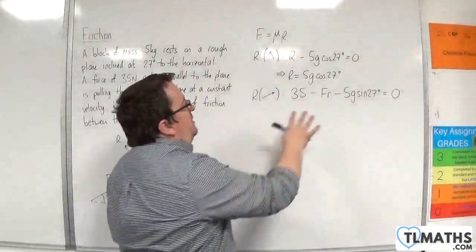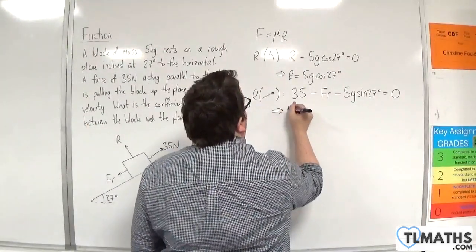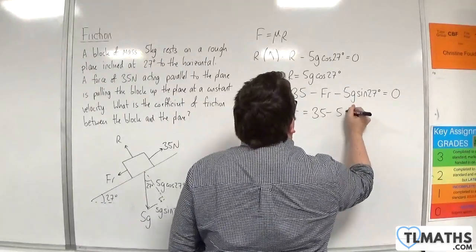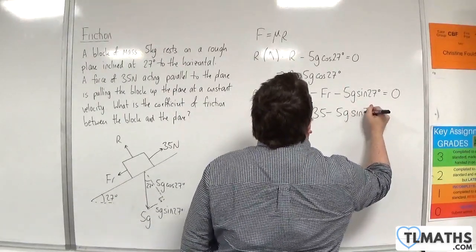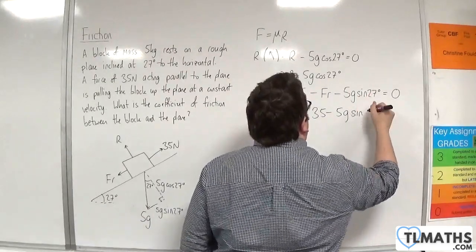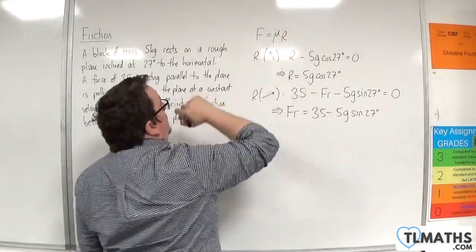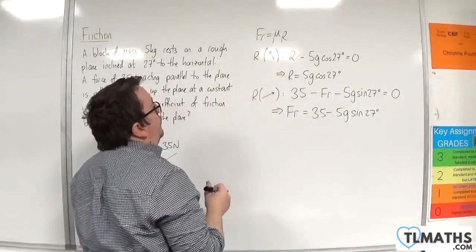This gives me enough information to find the friction. So the friction is going to be 35 take away 5g sine of 27 degrees. I've got the r, I've got the f, and I can plug that into my formula.